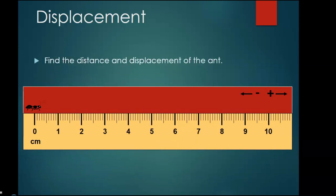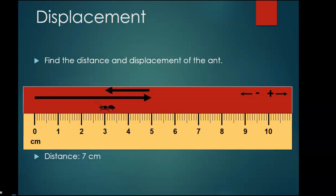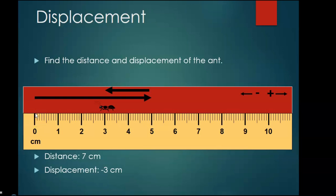Find the distance and displacement of the ant. The distance is seven centimeters: one, two, three, four, five, six, seven. The displacement is negative three centimeters, because you only measure from the starting point to the end point. The end point is at three — one, two, three — and looking at the direction of the ant and following the legend, the answer is negative three centimeters.